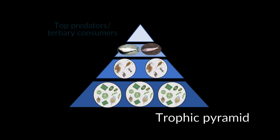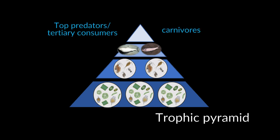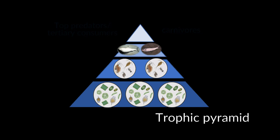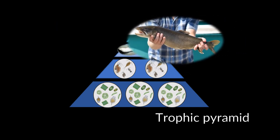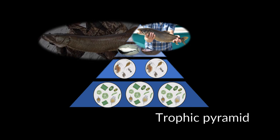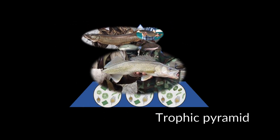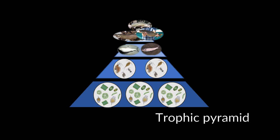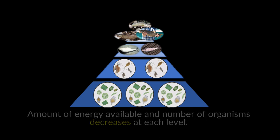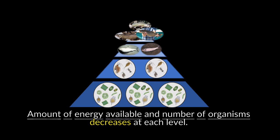The top of the model represents the top predators, or tertiary consumers, that feed on the prey fish. Examples in the Great Lakes include lake trout, salmon, smallmouth bass, muskie, and walleye. While there can be additional consumer levels, and some overlap among the levels depending on the ecosystem, the pyramid shape is not by coincidence. Rather, it serves to show that both the amount of energy available and number of organisms decreases at each level.